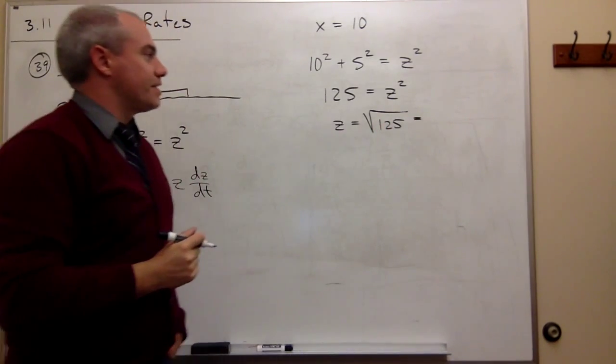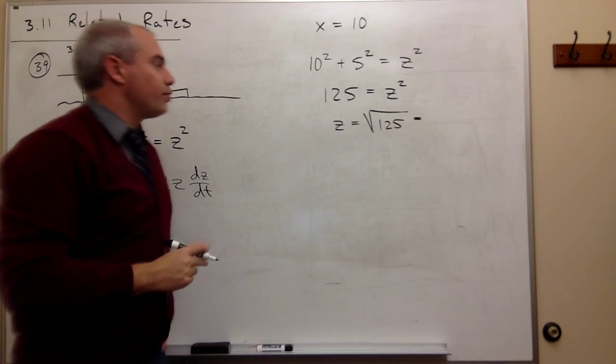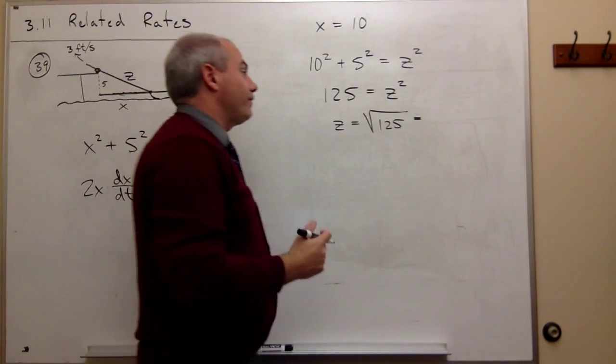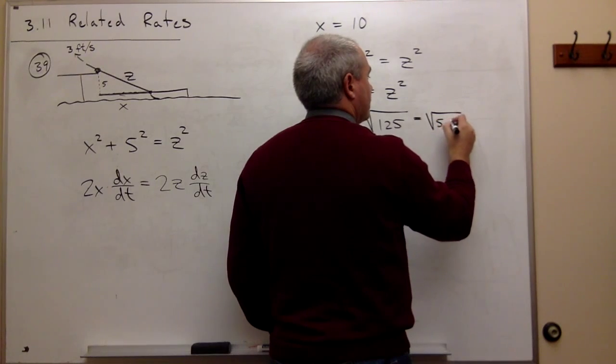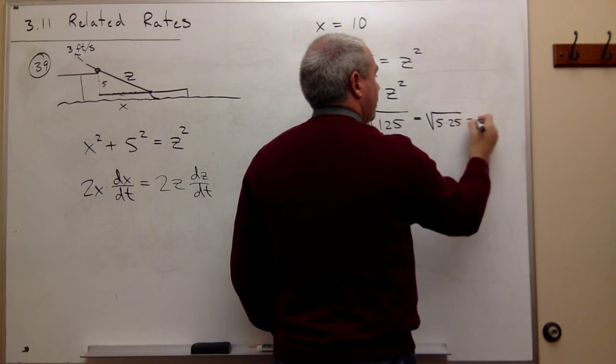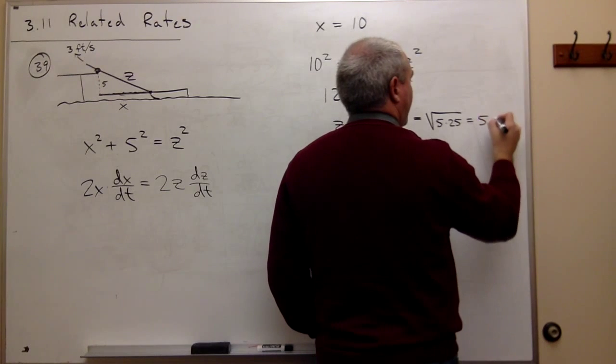What's z? It would be the square root of 125, or if you prefer, that's 5 times 25, so this is 5√5.